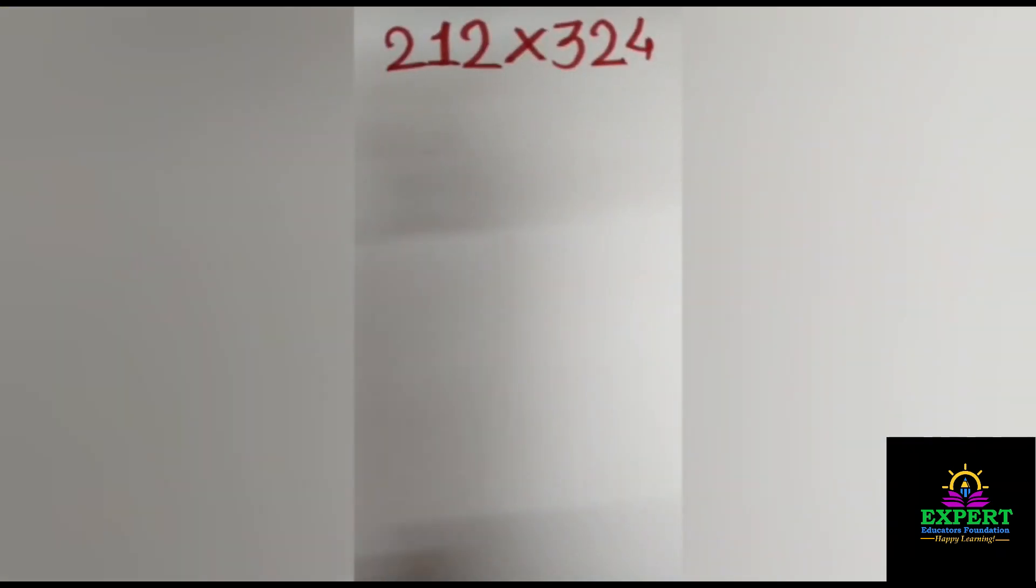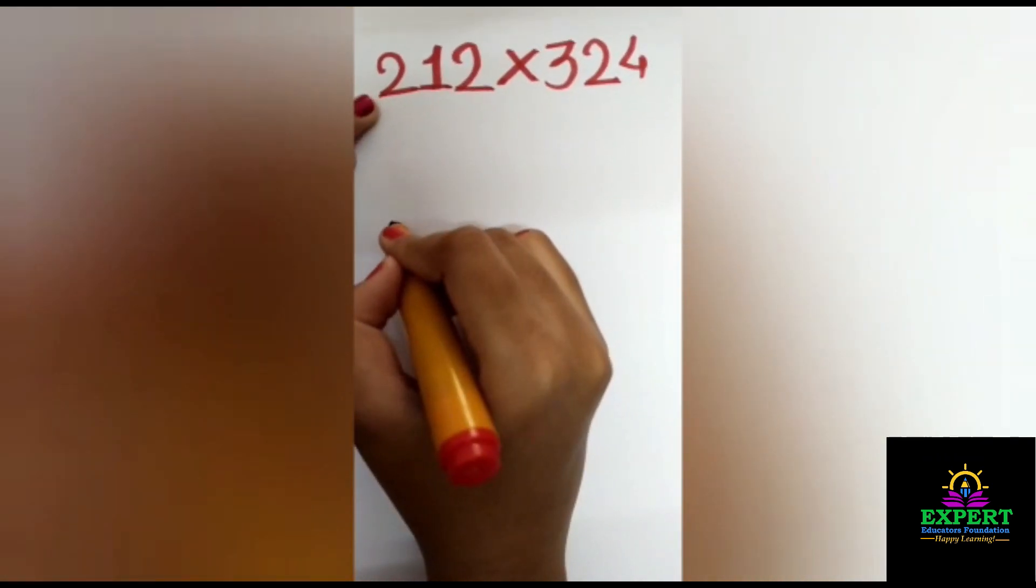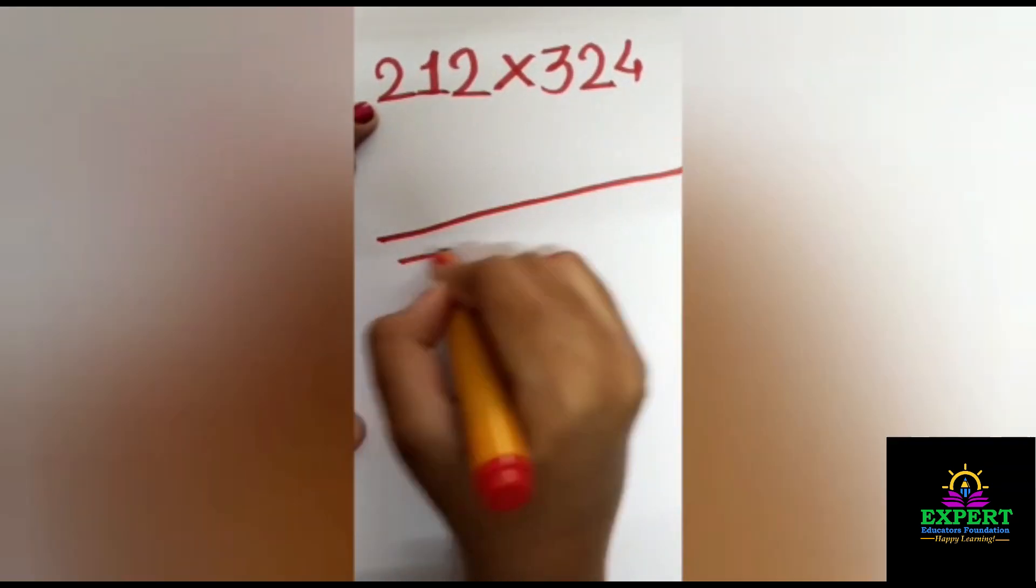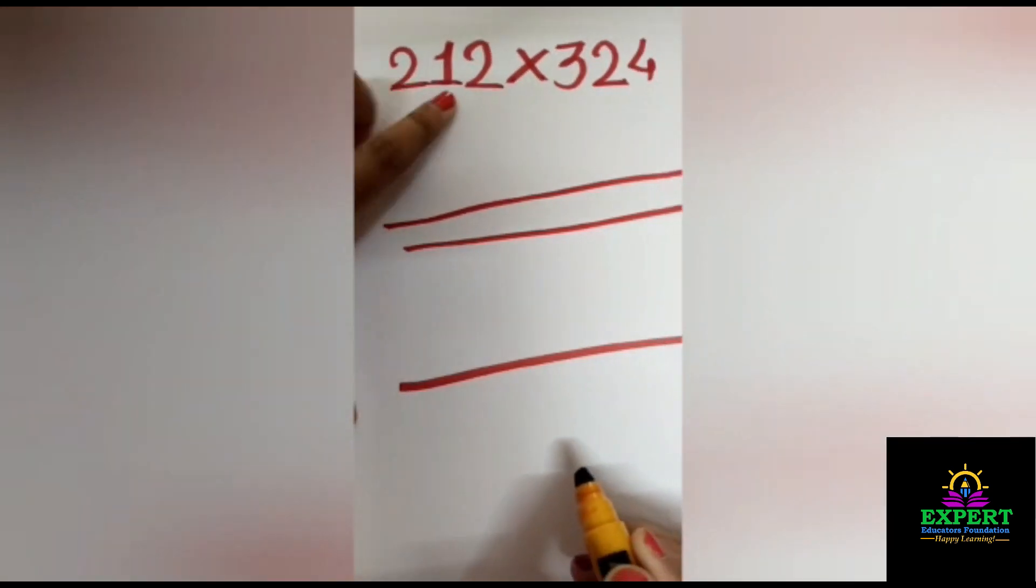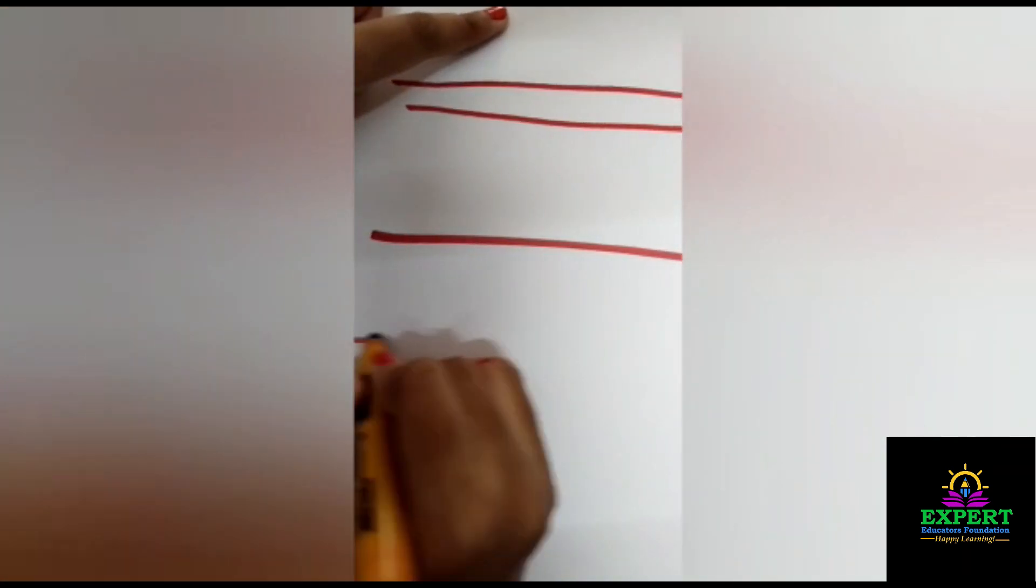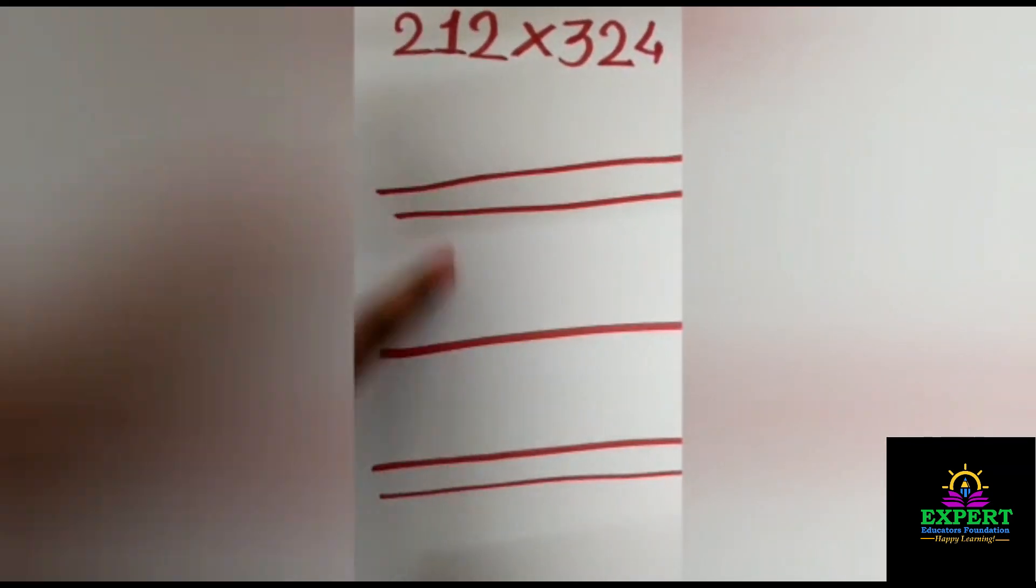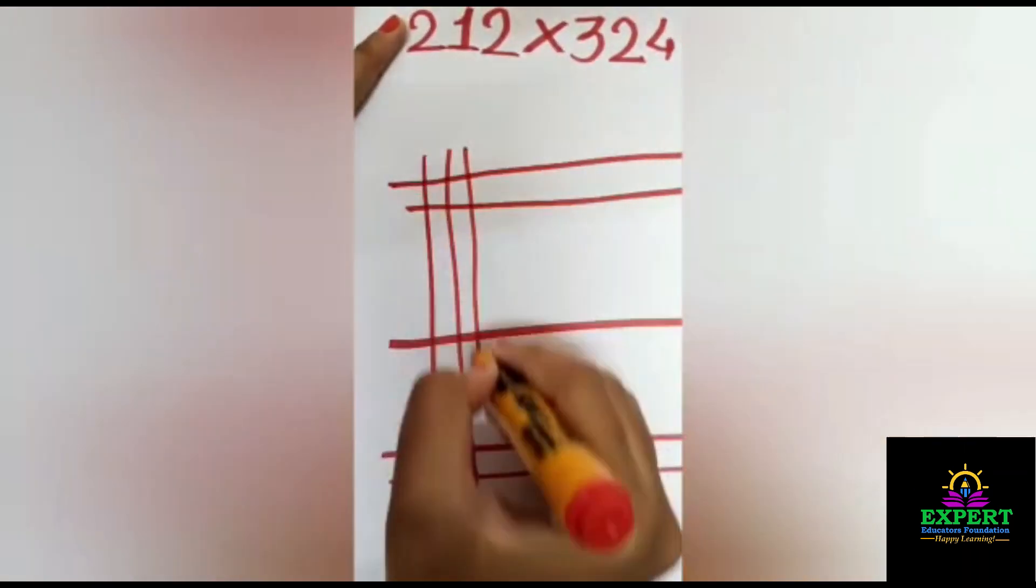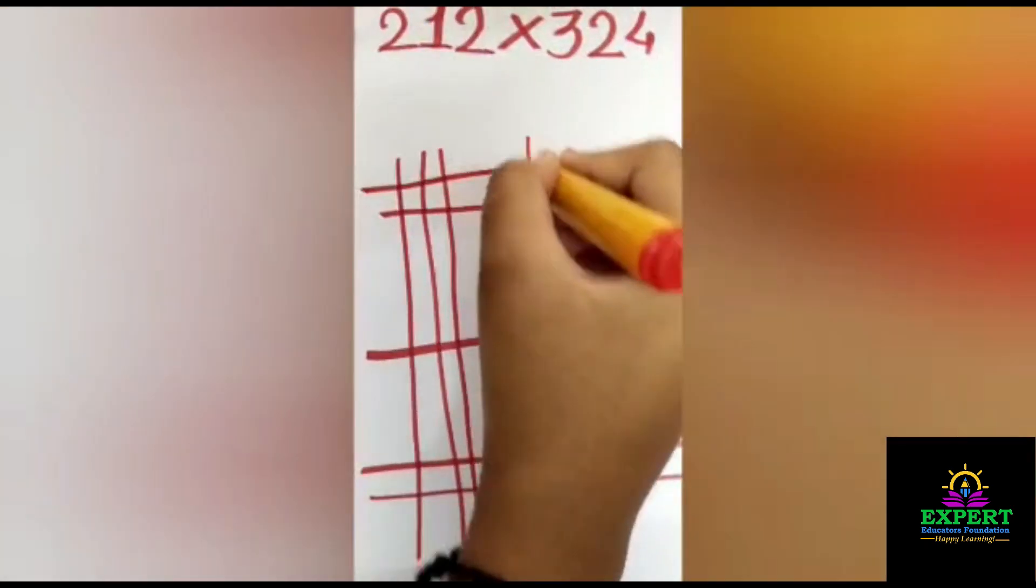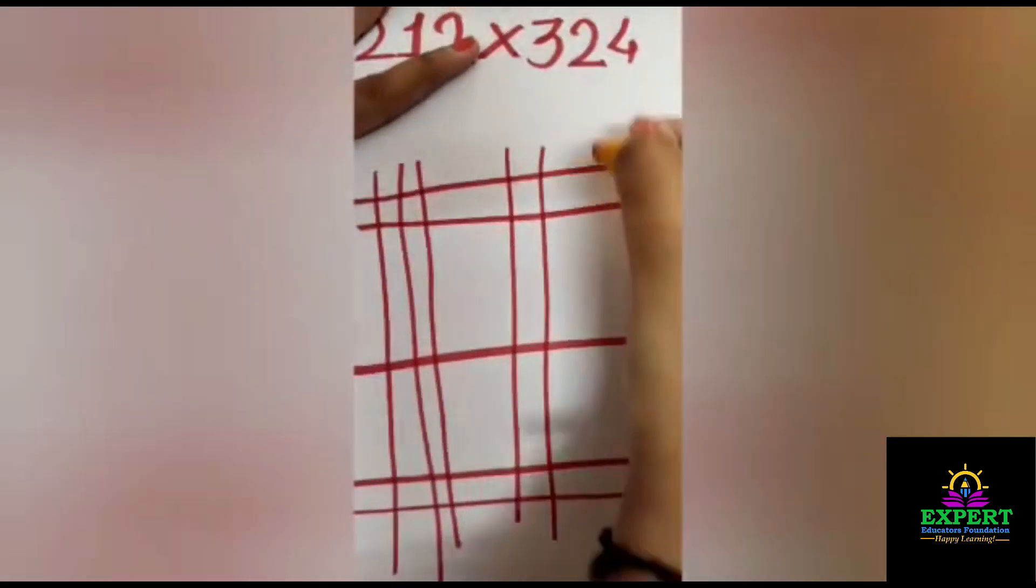Now we will do 212 multiply by 324. We have to take here two numbers, so one and two. The next is four. Again two over here, so one and two. Here the next one is 3, so we will take the opposite way: one, two, three. Next is 2: one, two. The next number is 4, so we will draw here four lines.